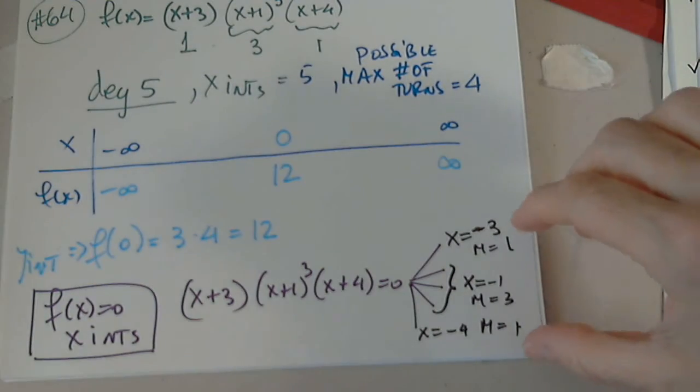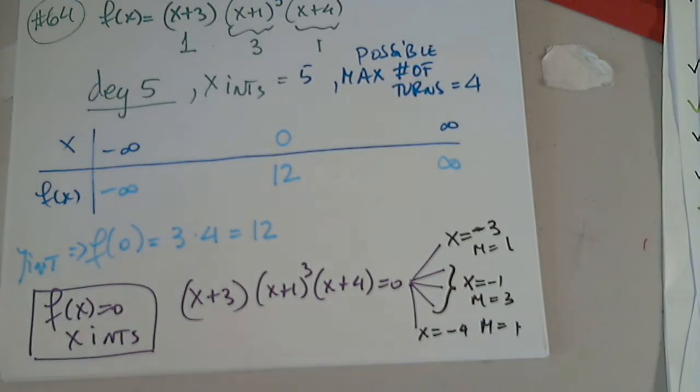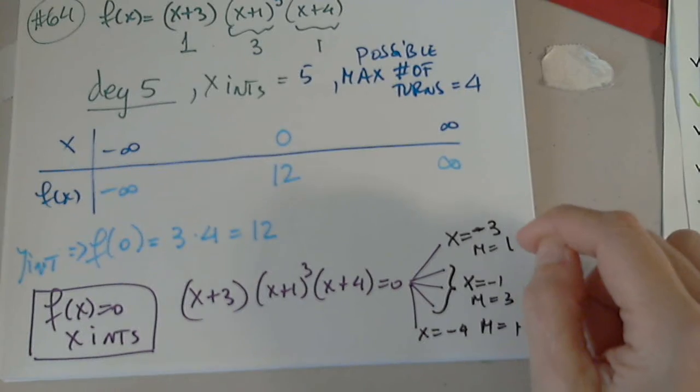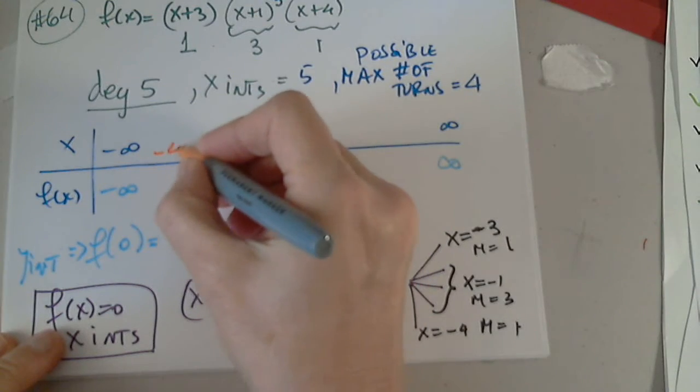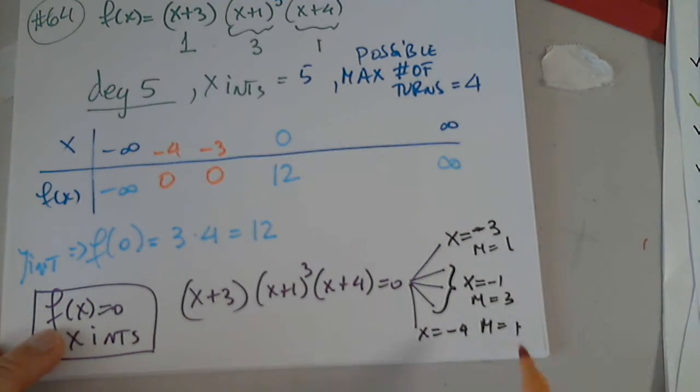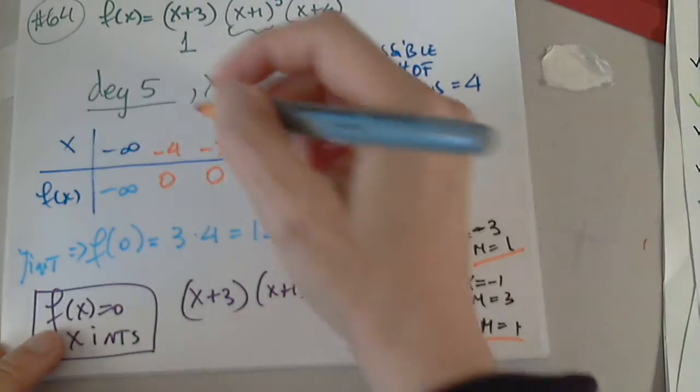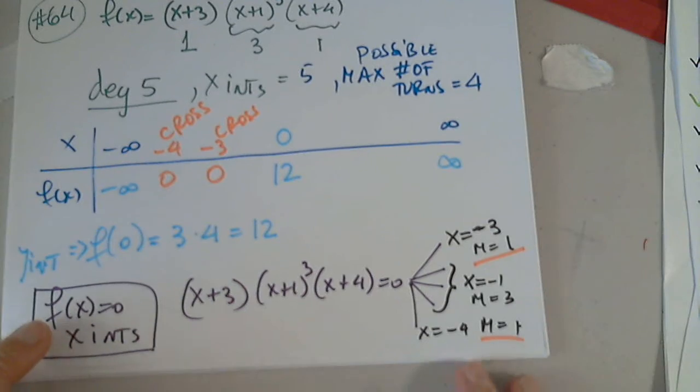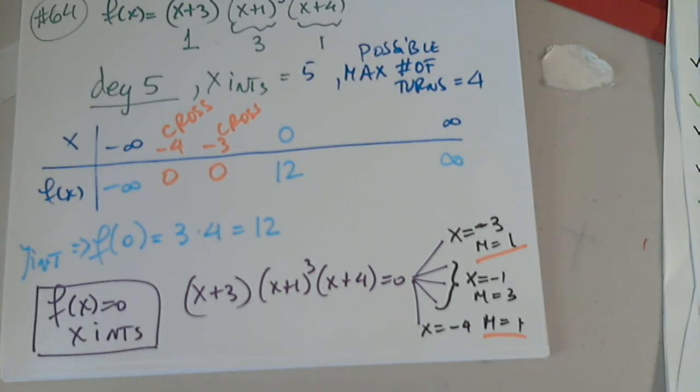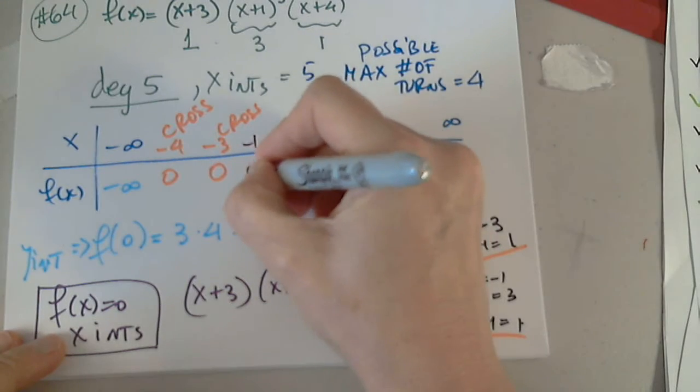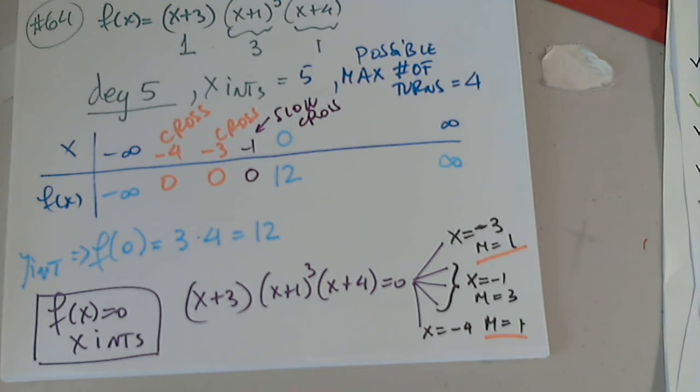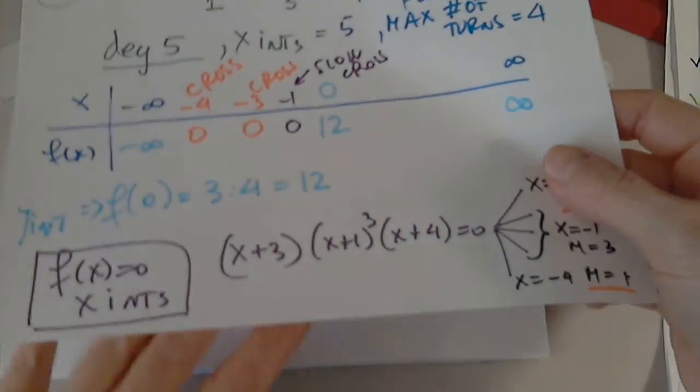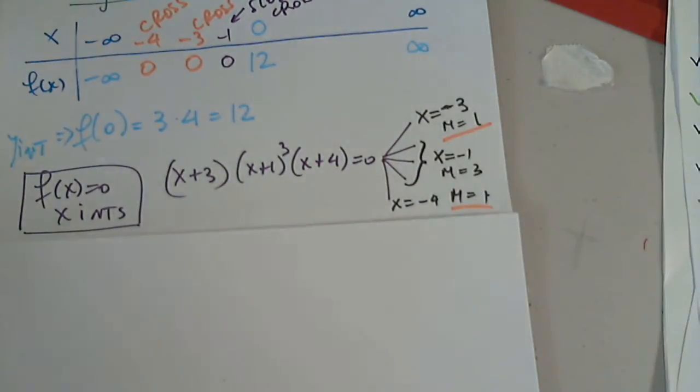So, both multiplicities 1. How will the function behave? What will the function do at those intercepts? Because multiplicity is 1. What will it do? It will cross. It will cross. Very good. Normal cross. What will it do at negative 1? Slow cross. Slow cross. That's it. That's all we need. We're done. As I promised, 5 minute. 3 minute. Situation. We are ready to graph it.